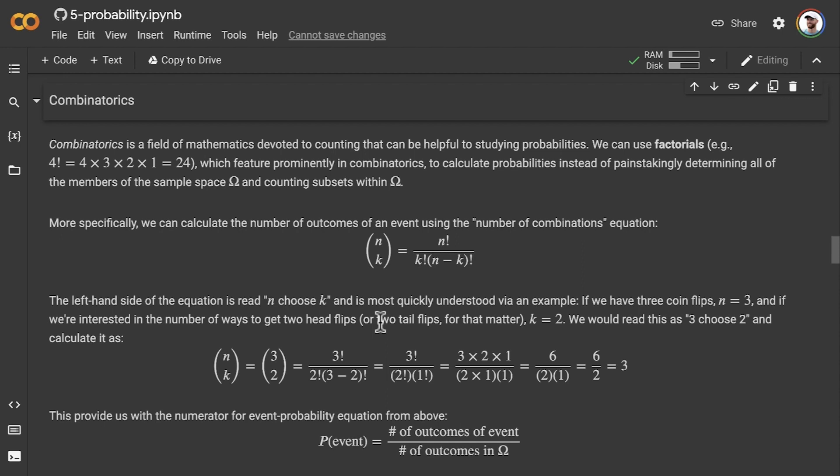As a specific example, we can calculate the number of outcomes of an event using this number of combinations equation, one of the most common equations that we see in combinatorics. The left-hand side of the equation, where we have the round brackets and one letter in italics on top of another, we read that as n choose k. It's easiest to understand this n choose k equation by working through an example. Let's jump right to numbers.